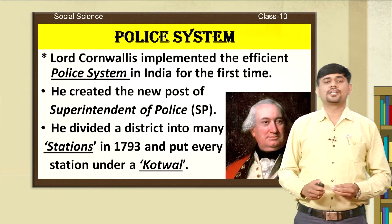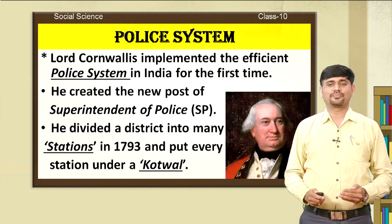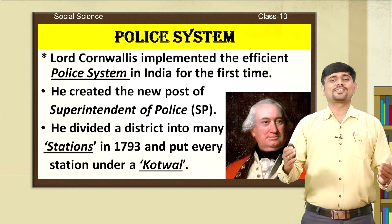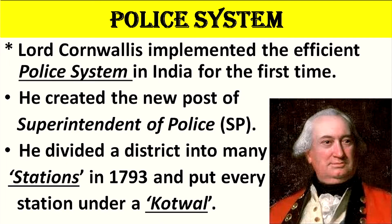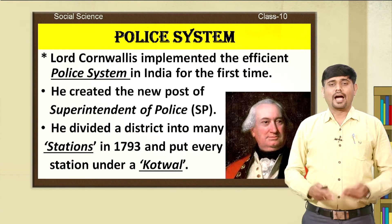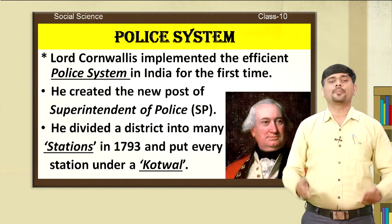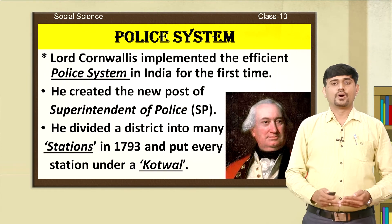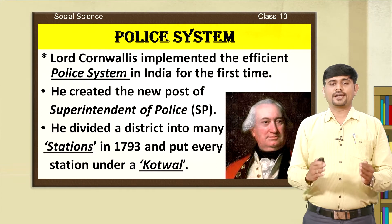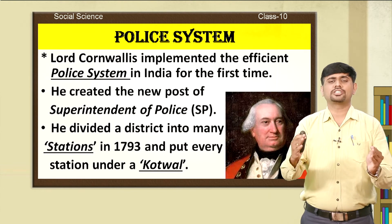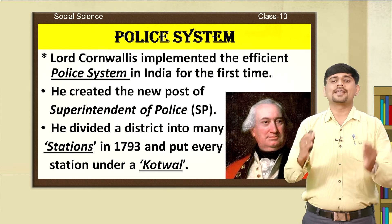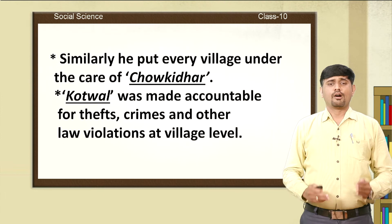Followed by the judicial system, let us learn about the police system of India. The police system in India has its roots with the British government. Lord Cornwallis implemented an efficient police system in India for the first time and is therefore also called the pioneer of the Indian police system. He created the new post of Superintendent of Police, the head of the police service in a district. He divided a district into many stations in 1793 and put every station under a Quathwal — a chief police officer in a district.